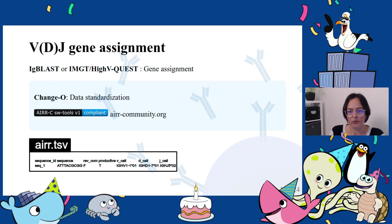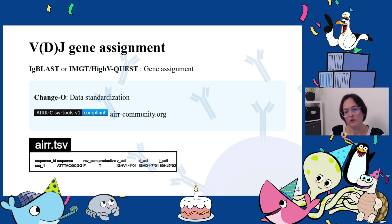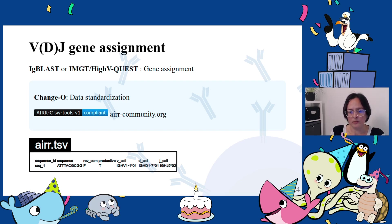Presto generates output that can be run through standard VDJ assignment software like IMGT/HighV-QUEST or IgBLAST. These tools will identify the VDJ genes in the nucleotide sequence and the boundaries of different regions of the BCR sequence. Change-O is then used to standardize the output of this gene assignment and prepare a tabulated file for downstream analysis. This tabulated file follows the AIRR Community standard format for repertoire data. Besides additional quality controls and filters, there are many possible downstream analyses that can be performed with Incantation.